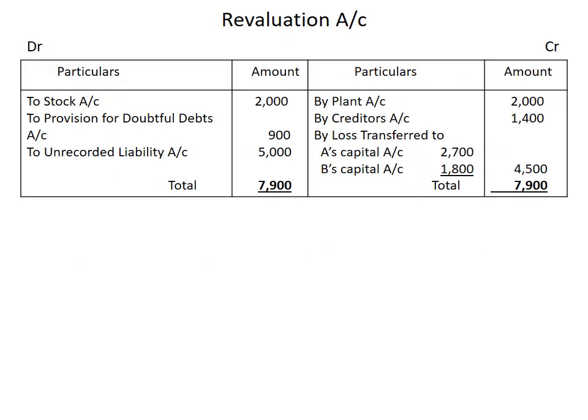The first thing we have to prepare is the revaluation account. If there is any increase in asset or decrease in liability, we put it on the credit side of the revaluation account. If any asset decreases or liability increases, it goes on the debit side. We are asked to increase our plant to Rs. 32,000, whereas in the old balance sheet the plant is Rs. 30,000 — so we increase by Rs. 2,000, which goes on the credit side. We are also asked to revalue our stock to Rs. 18,000, whereas in the old balance sheet it is Rs. 20,000 — so we decrease stock by Rs. 2,000, which goes on the debit side.